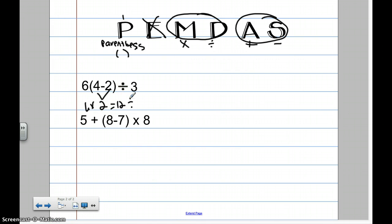Then, I have to do my division next. Multiplication, division, left to right. So, 12 divided by 3 is 4. So, the answer to this is 4.